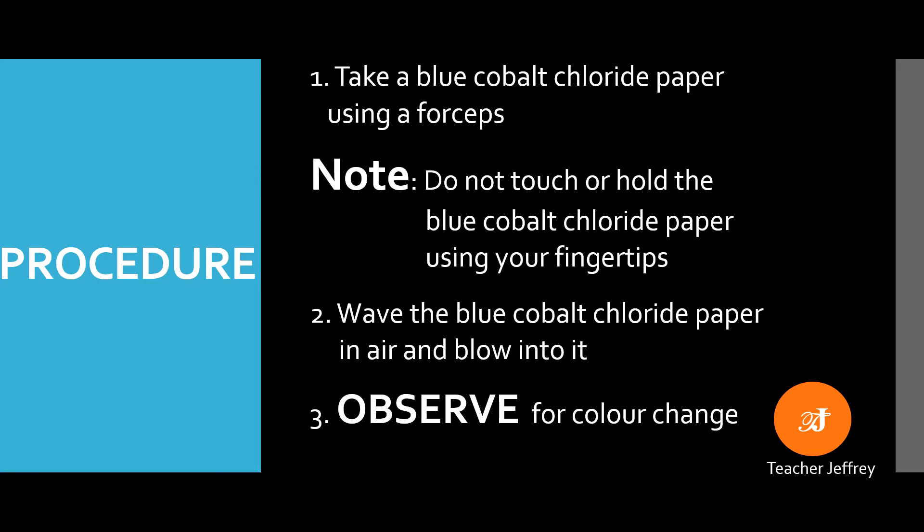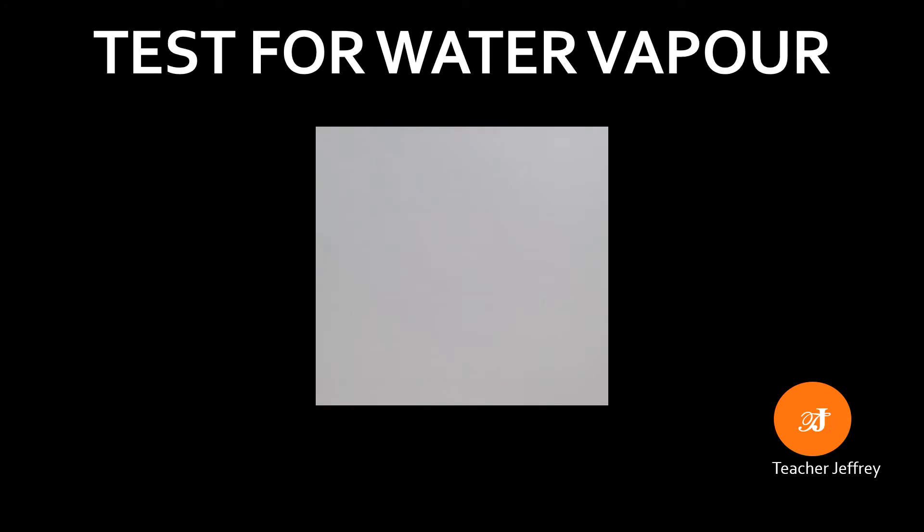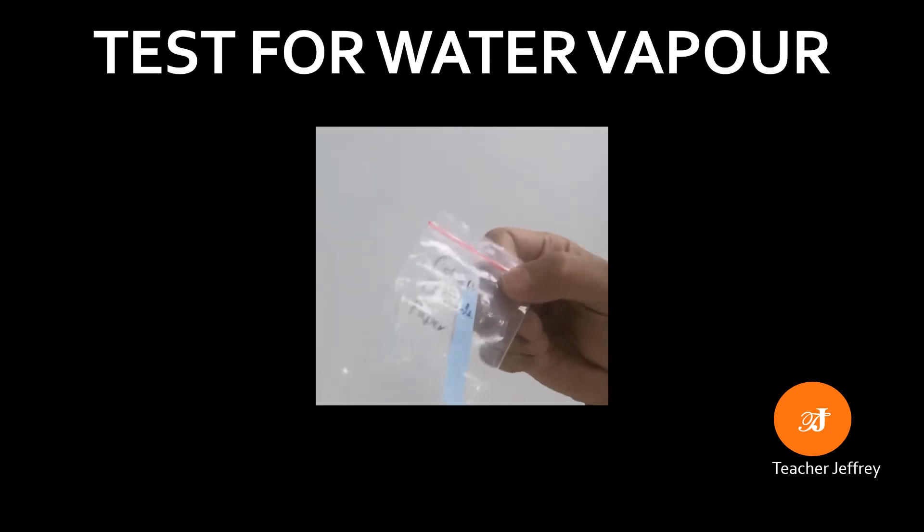First, take the blue cobalt chloride paper using forceps. Note: do not touch or hold the blue cobalt chloride paper using your fingertips. Write down your comments below — why are we not allowed to touch or hold the blue cobalt chloride paper? Next, wave the blue cobalt chloride paper in air. After waving, you can also blow into the blue cobalt chloride paper. Lastly, observe for color change. This is the experiment proper.